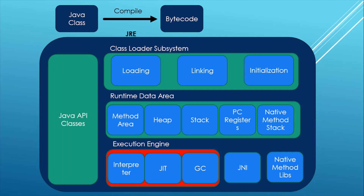Garbage collection is a process by which Java programs perform automatic memory management — all objects that are unreferenced and no longer required are cleaned from memory by garbage collection. JNI — the Java Native Interface — is a native programming interface which allows Java code inside the JVM to work with applications and libraries written in other programming languages such as C or C++. To support these functionalities we have Native Method Libraries, which are written in other programming languages and can be loaded through the JNI.